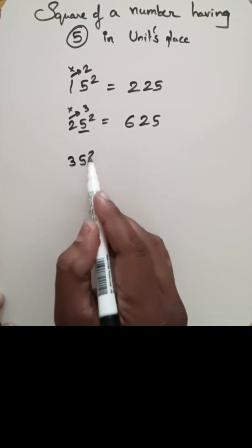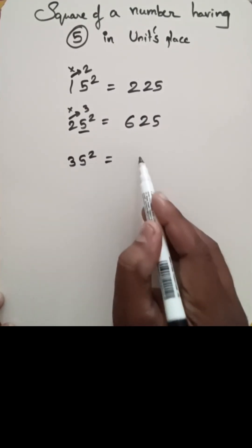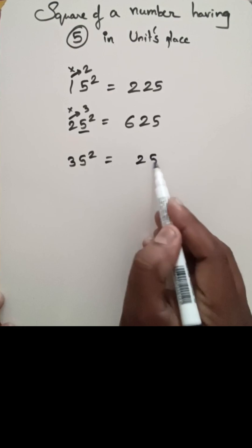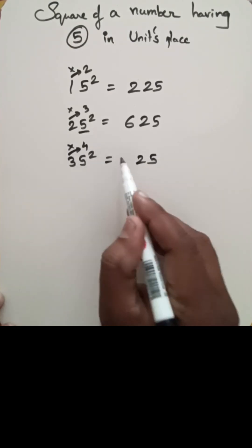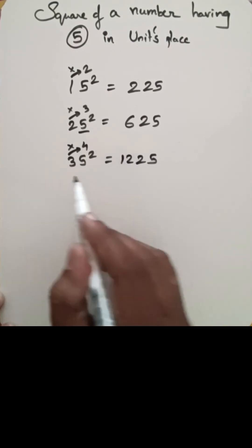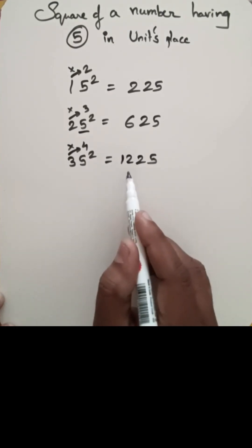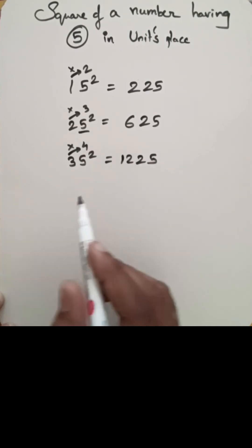35 square — 5 square is nothing but 25, and 3, after we have 4, so 3 into 4 is 12. So 35 square is 1225.